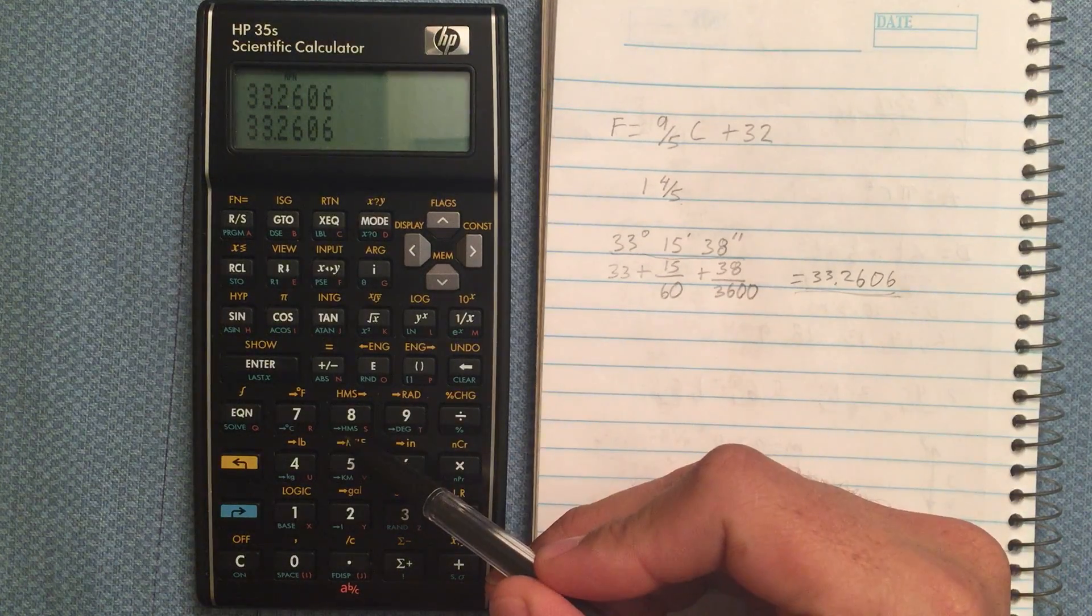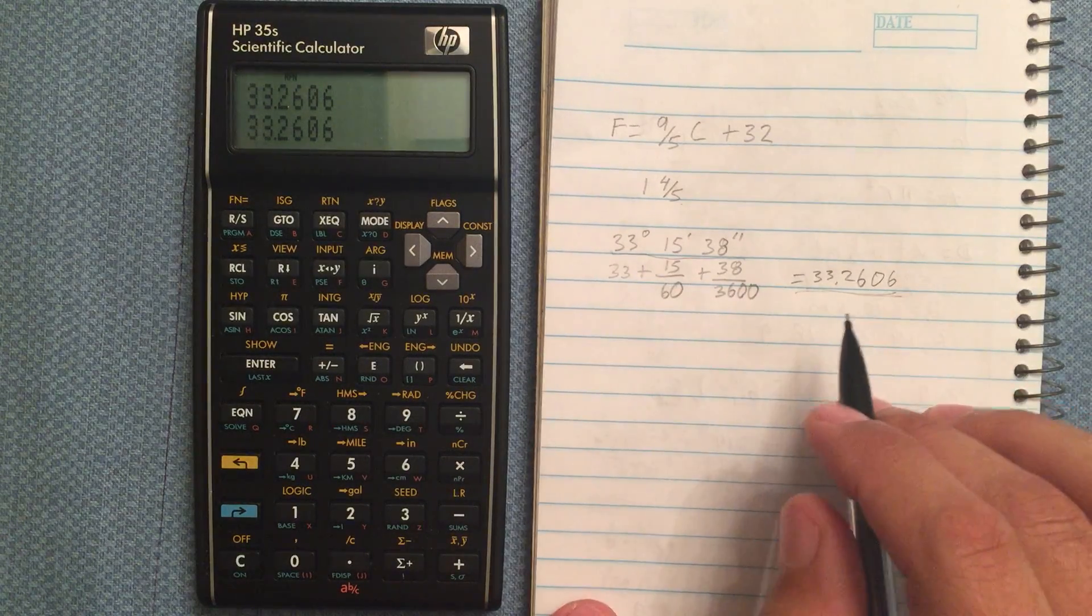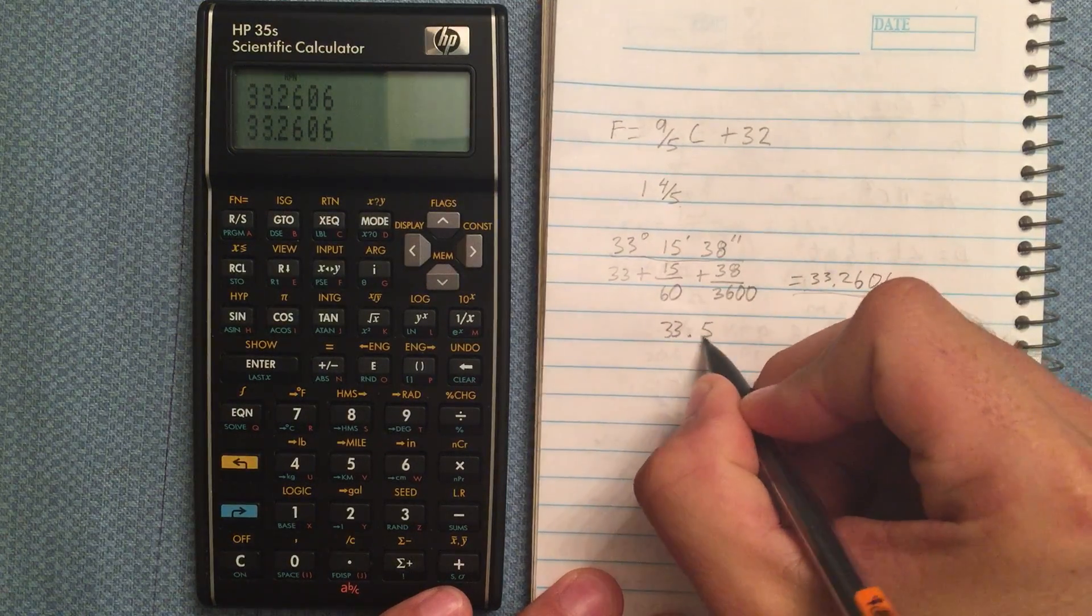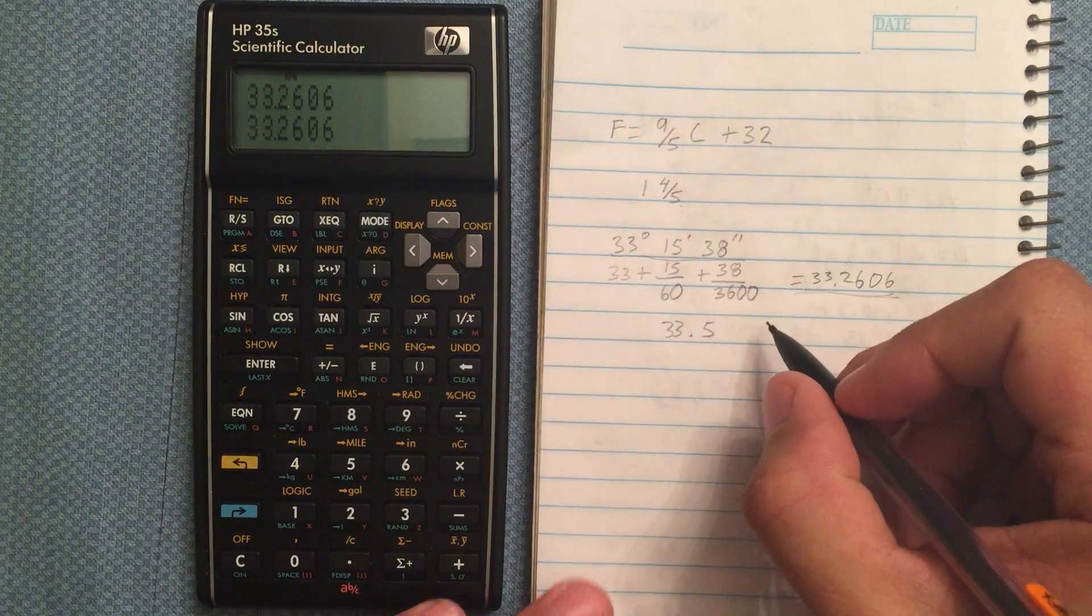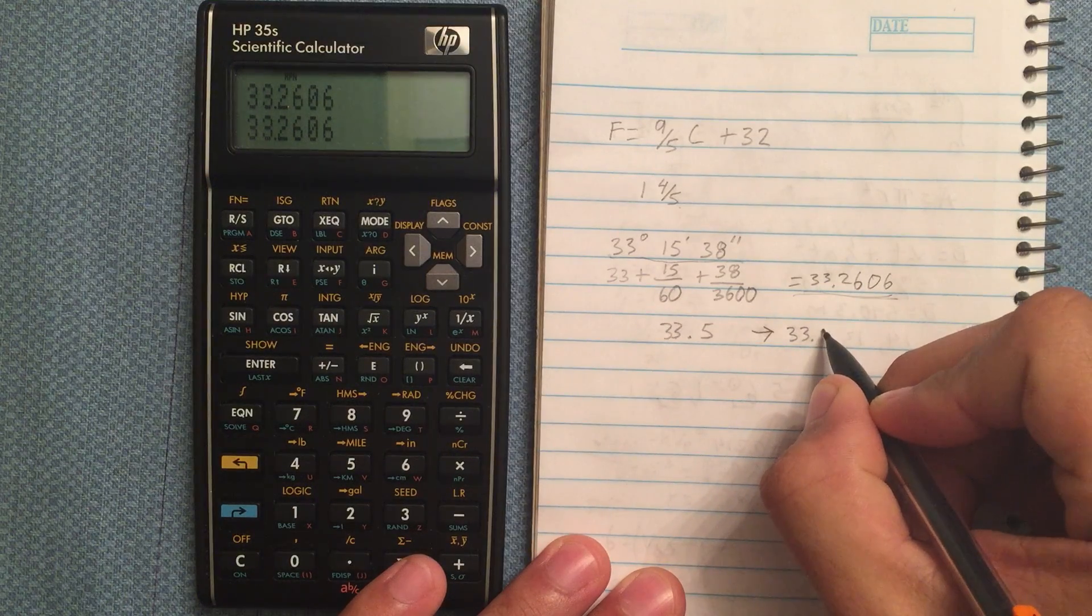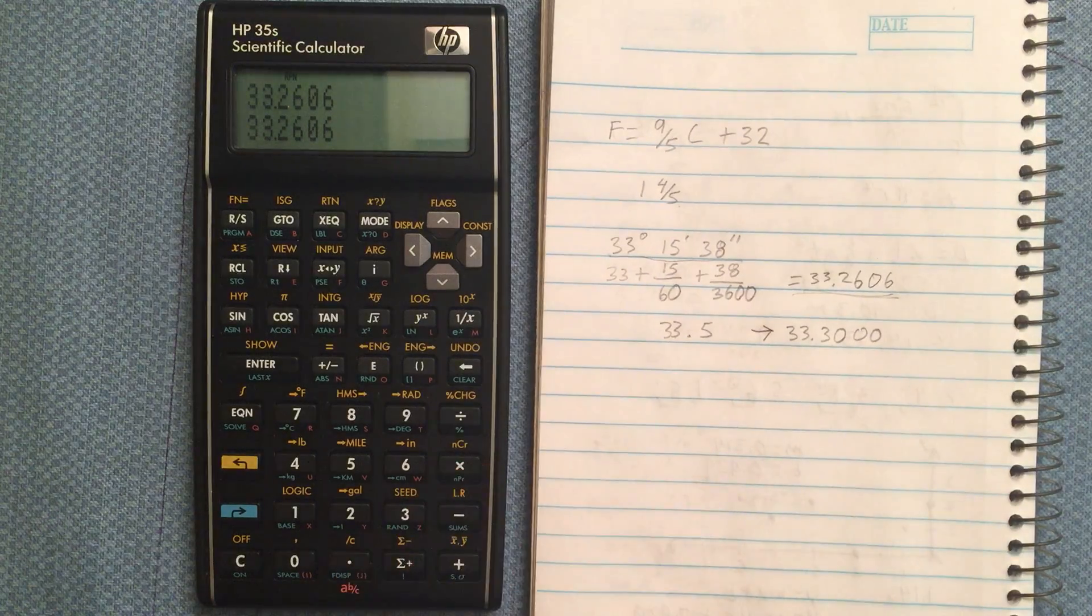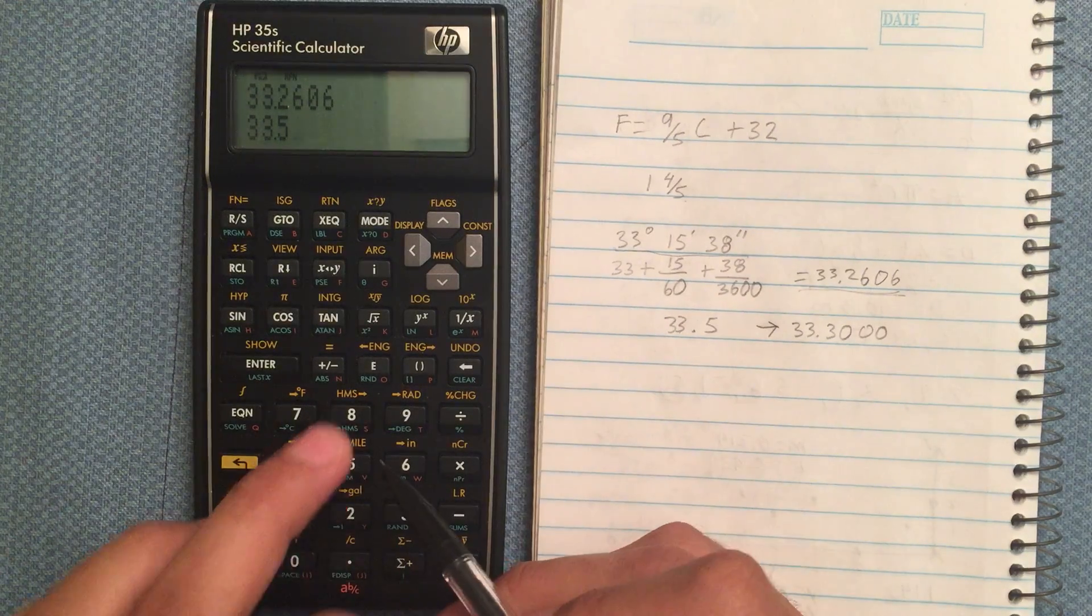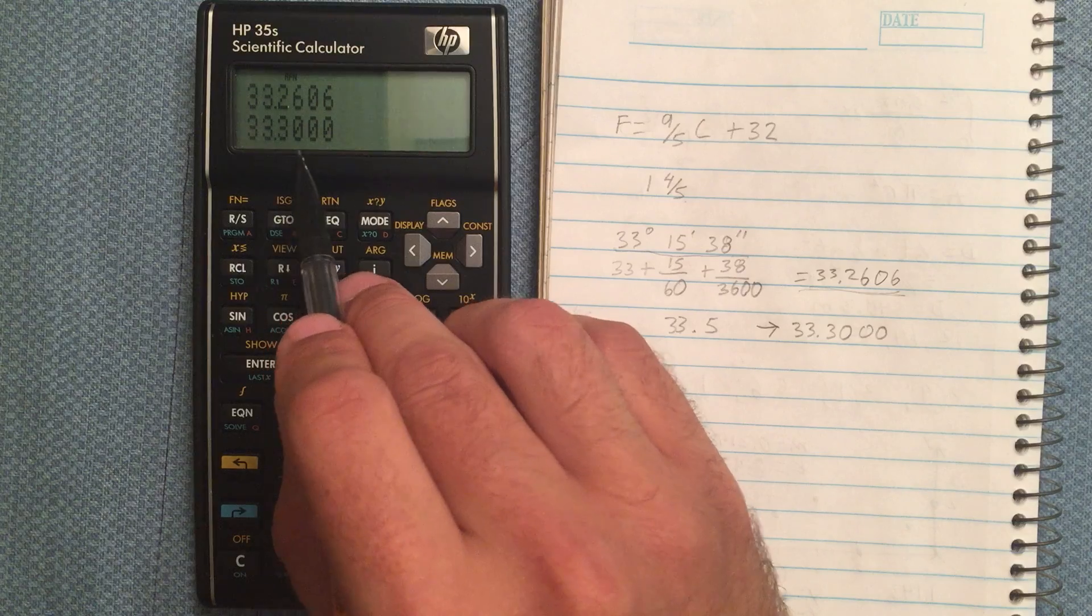And, of course, it works the other way using the blue shift button to hours, minutes, seconds. So, if I went from, oh, I don't know, 33.5, just logically, that should give me 33 degrees 30 minutes 00 seconds in hours, minutes, seconds. 33.5, and do blue shift to hours, minutes, seconds, and we get 33.3000.